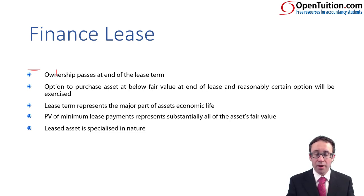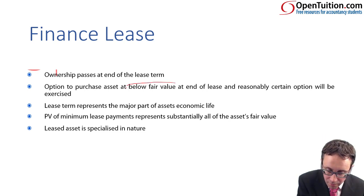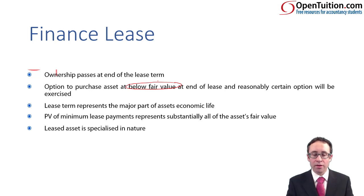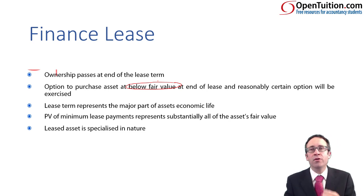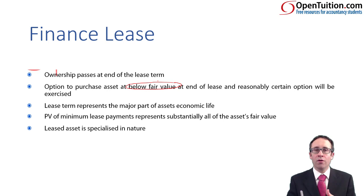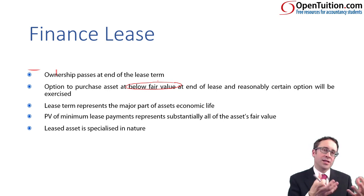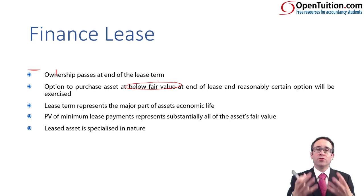The second scenario is that there is an option to purchase the asset. At the end of the lease period, the lessee can buy the asset at below fair value — for less than what it is expected to be worth — and we're pretty sure that will happen. It makes economic sense: if you can still get benefit from that asset and pay less than what it's worth, you may as well buy it. So the lessee will have that asset for its entire life, consuming the rewards and suffering the risk. We will treat it as a finance lease from the start of the lease term.